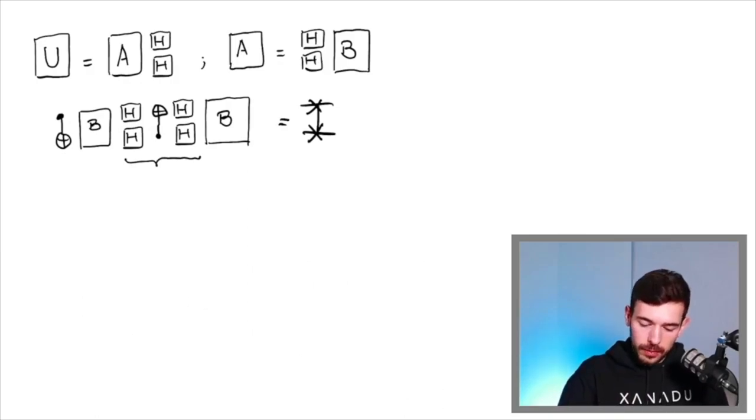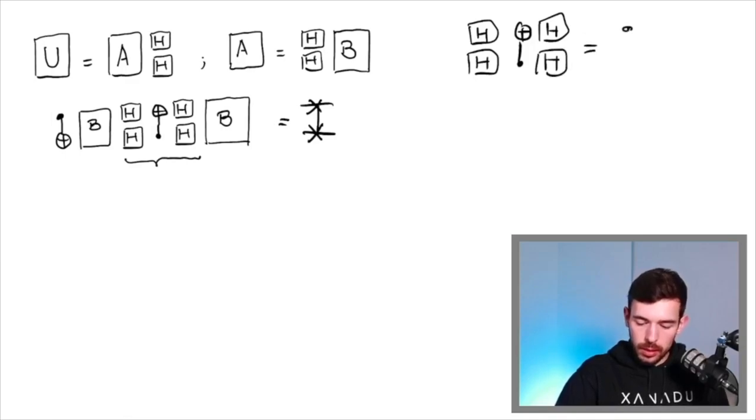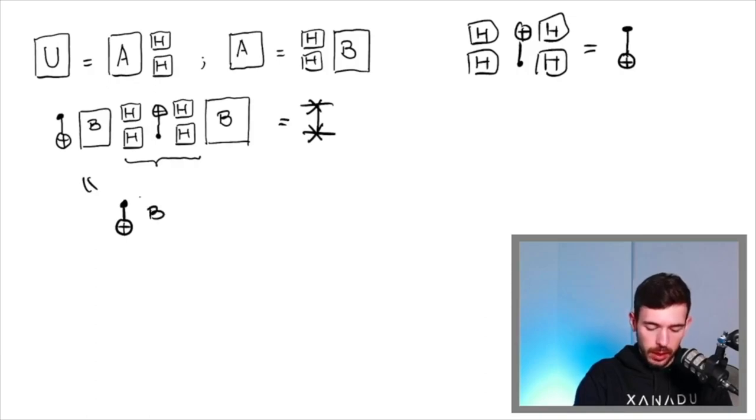And that is, that applying Hadamards at the beginning and the end of a CNOT operator is equal to just swapping the control and target of the CNOT. So if we apply that in our template, we are going to get that this expression is just the same, like apply the CNOT, then the operator B, now flip the CNOT, so we get something like this, and finally apply the B again.